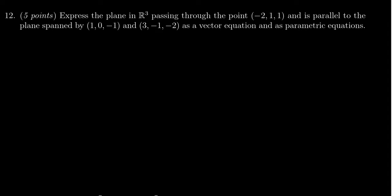We are asked to express a plane in R³ that passes through the point (-2, 1, 1) and is parallel to the plane spanned by (1, 0, -1) and (3, -1, -2). We will express this plane as a vector equation and as parametric equations.